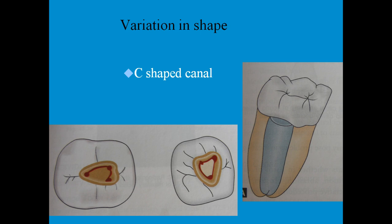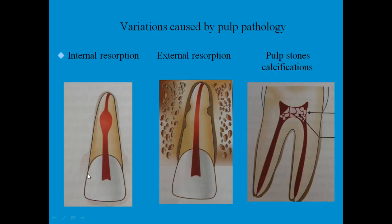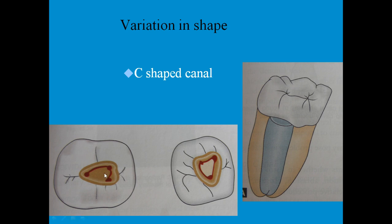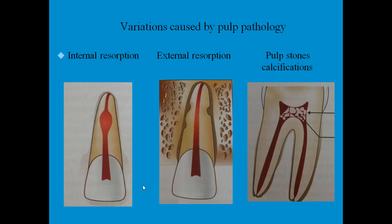Another commonly found variation is the C-shaped canal. In normal anatomy, you find three separate orifices, but in a C-shaped canal, a thin ribbon-shaped pulp connects all three orifices, taking the shape of a 'C'. This is most challenging for an endodontist because treating the thin ribbon-shaped pulp tissue between the orifices is very difficult.